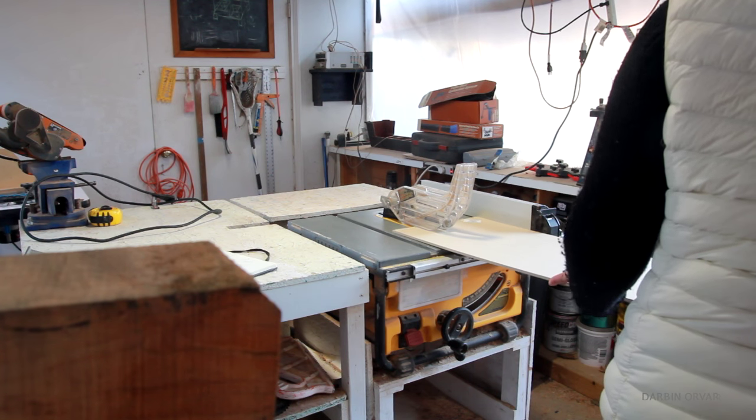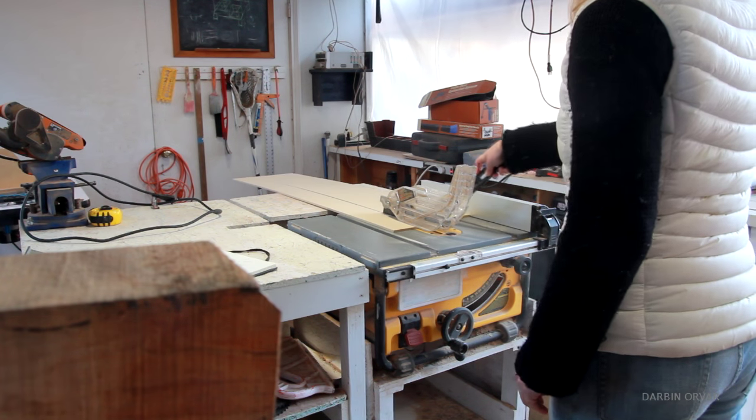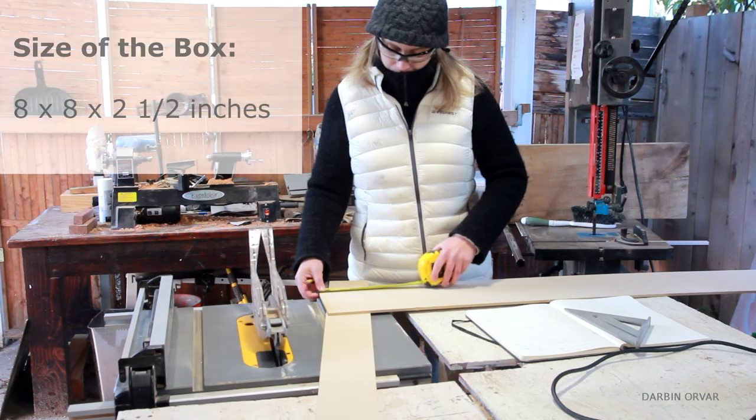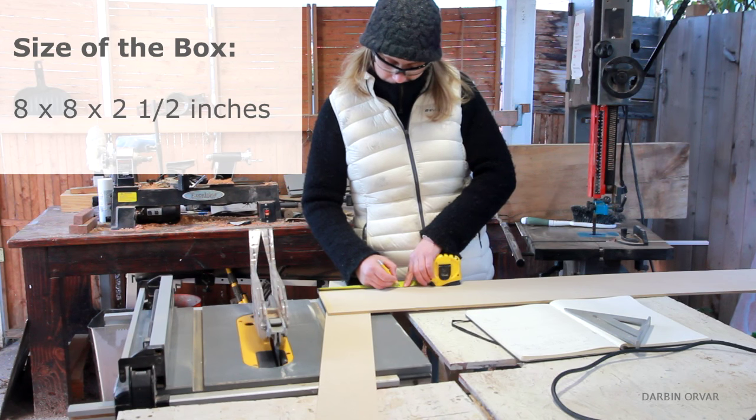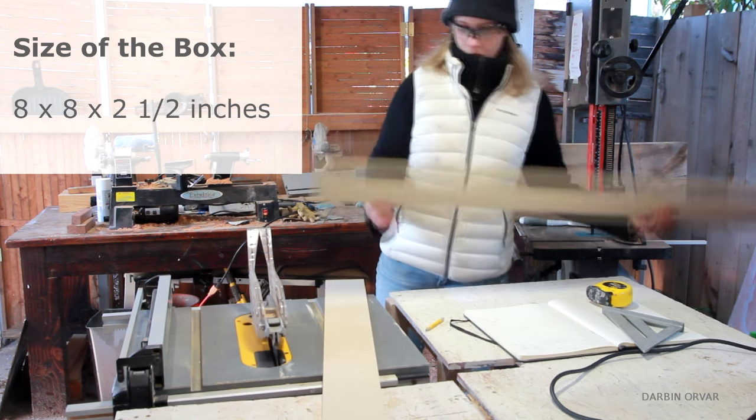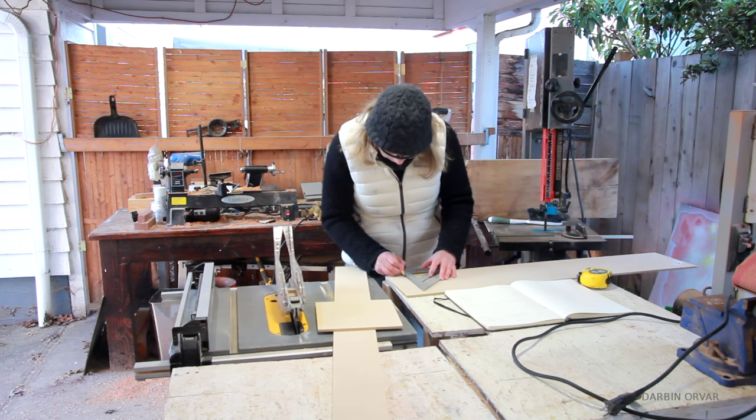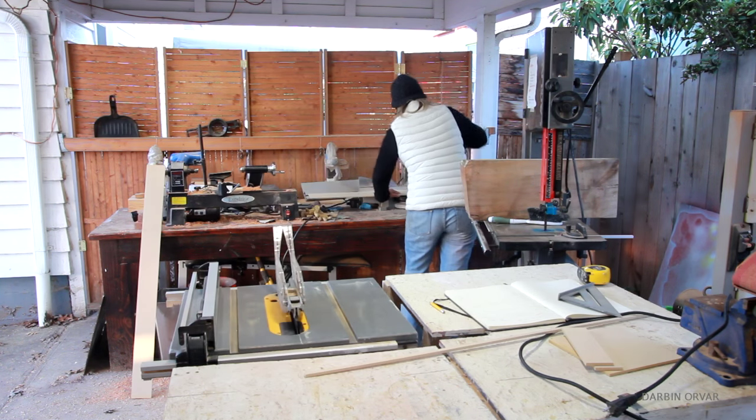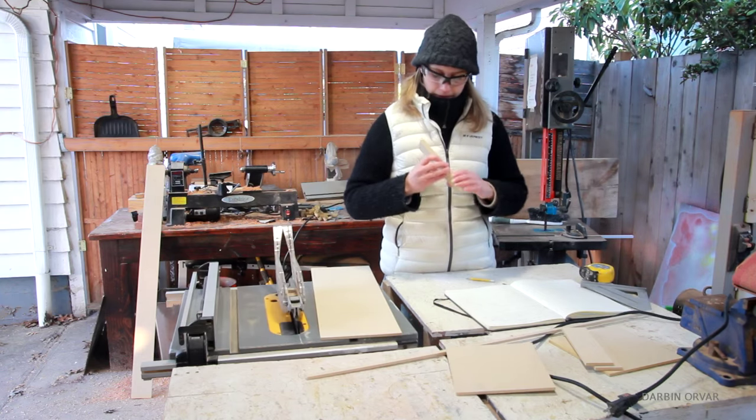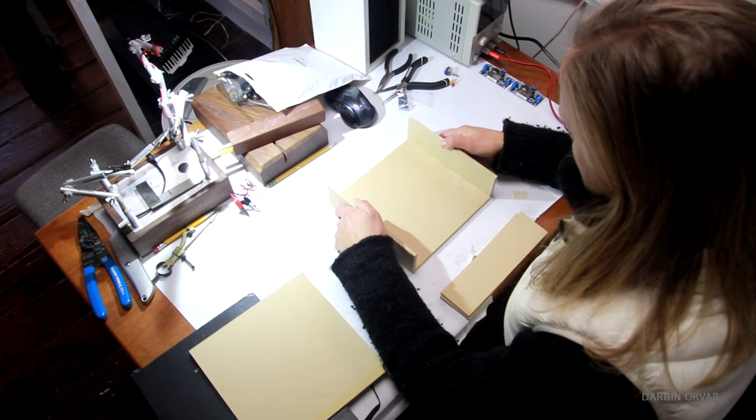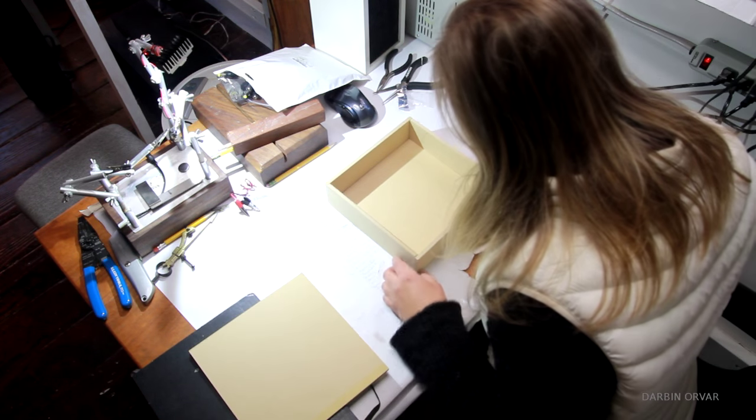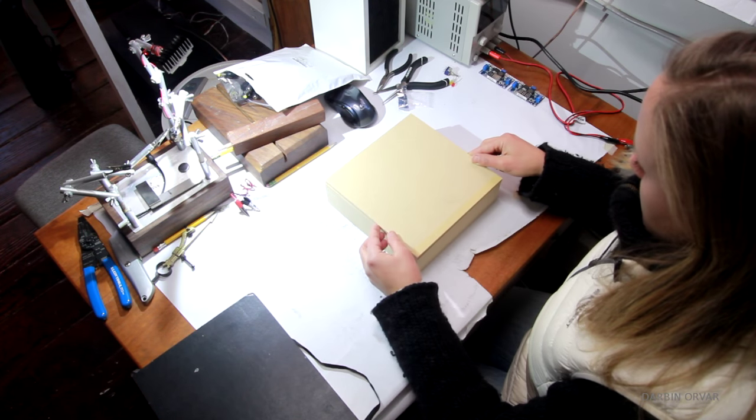So I'm starting with cutting up the materials for the box itself, and I'm using quarter inch MDF. The final dimensions of the box will measure 8 by 8 by 2.5 inches, so just cutting up the pieces for that. And let's put it together. Looks good.